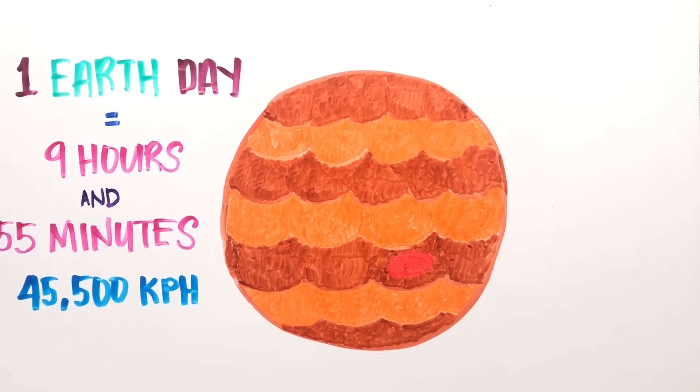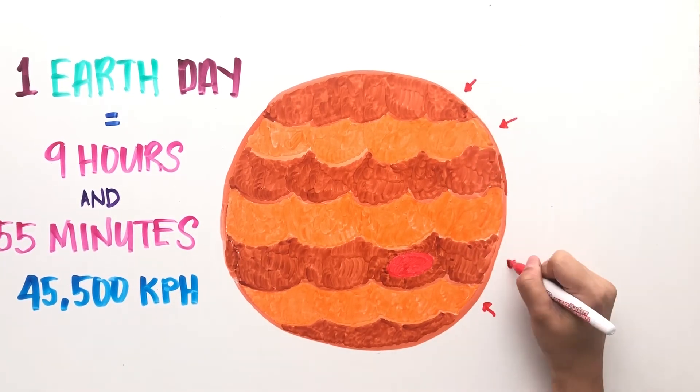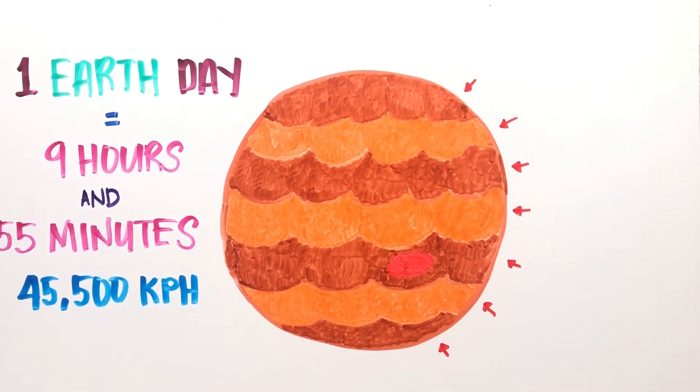This rapid rotation, accompanied by the planet's composition, makes its beautiful bands of clouds, driven by convection currents that result from the heat generated within the planet. The lighter bands, called zones, are high-altitude regions of higher pressure and lower temperatures.